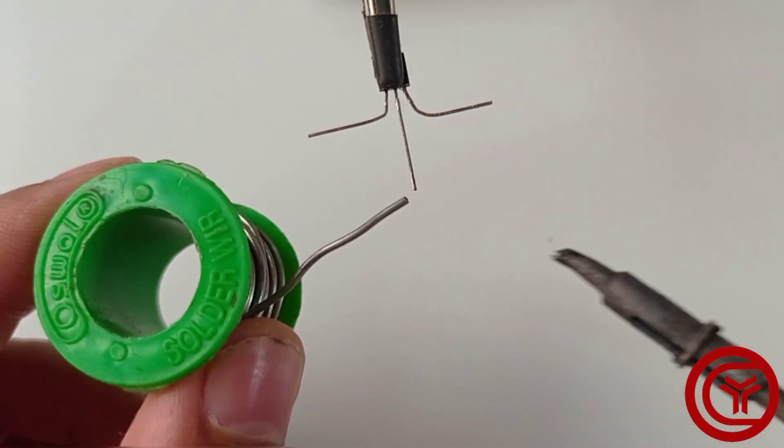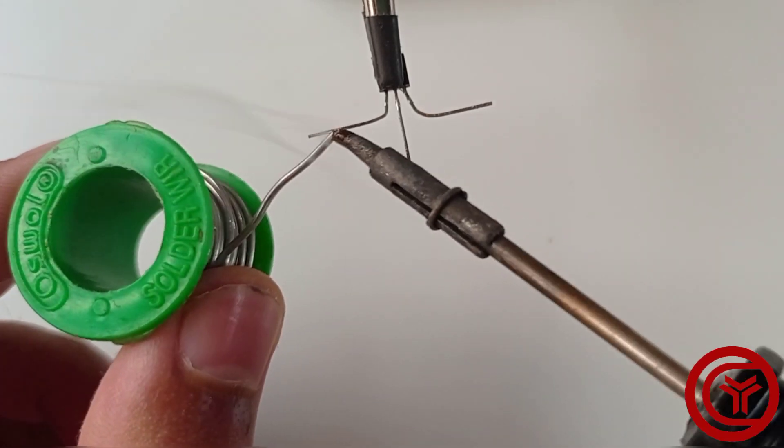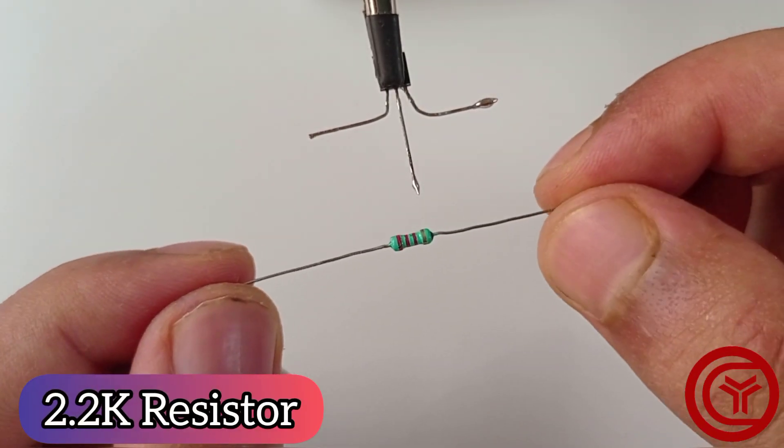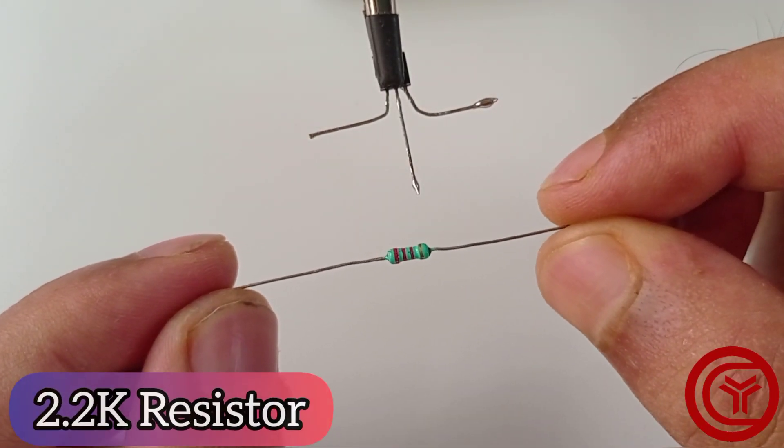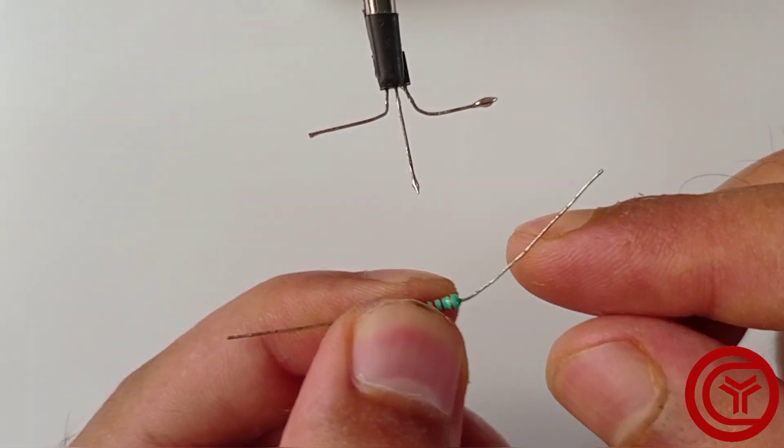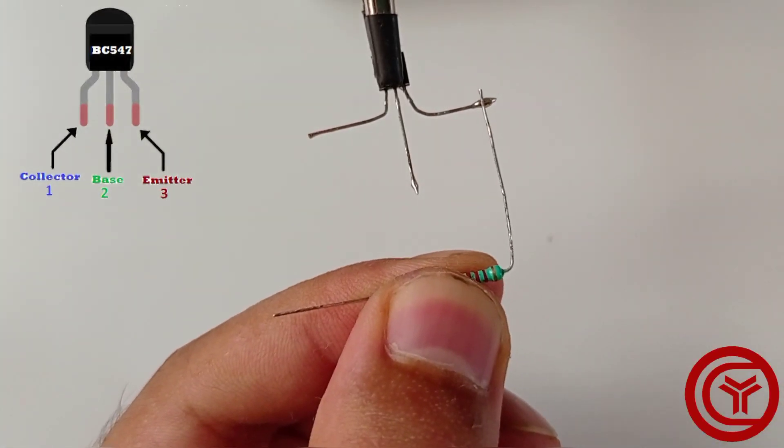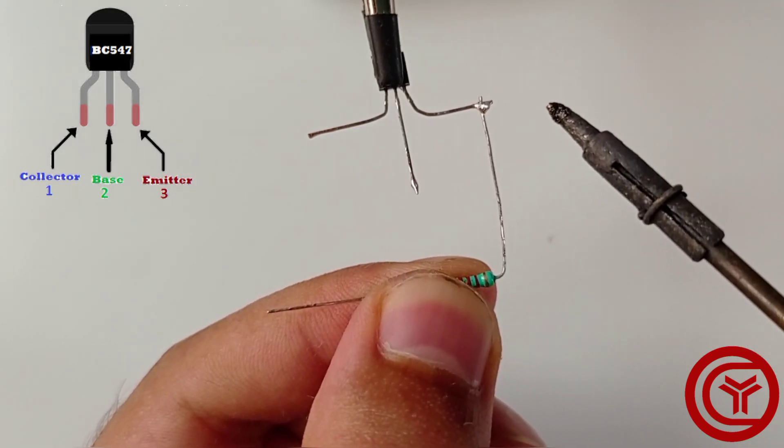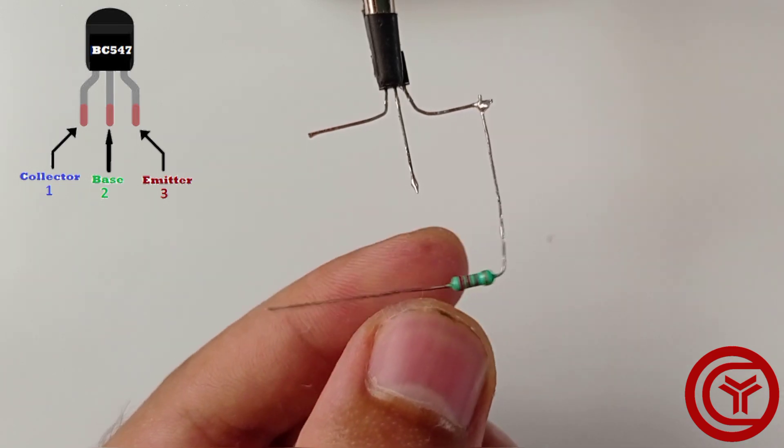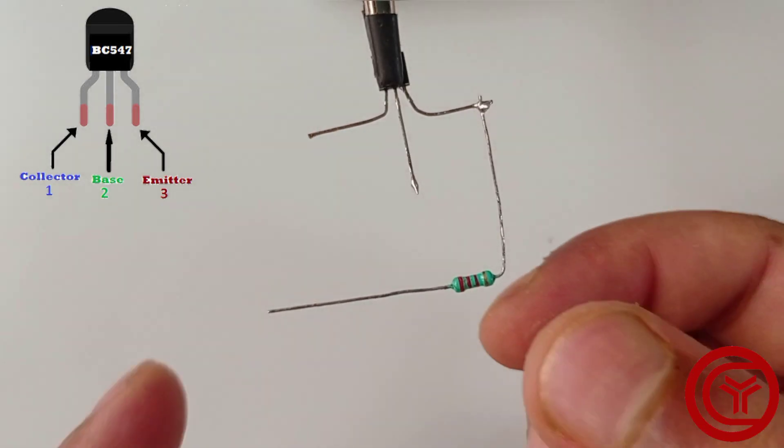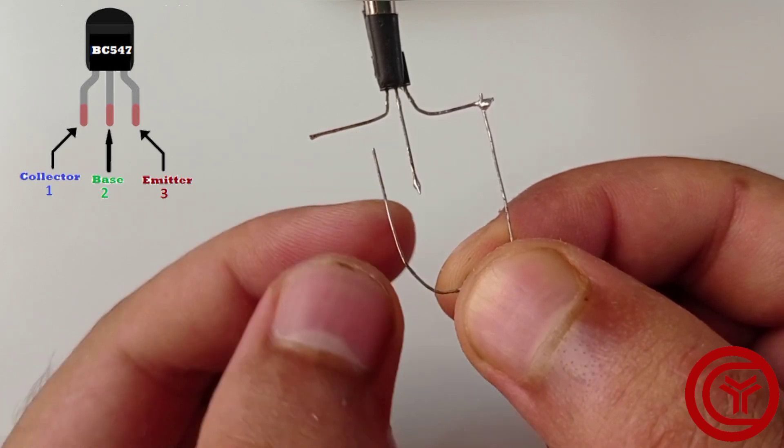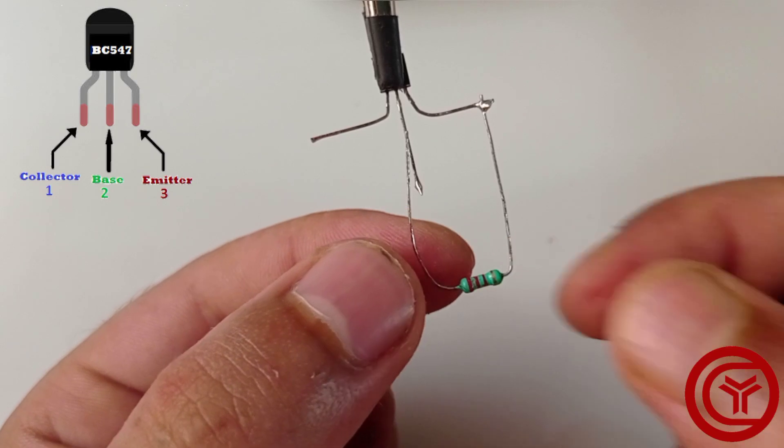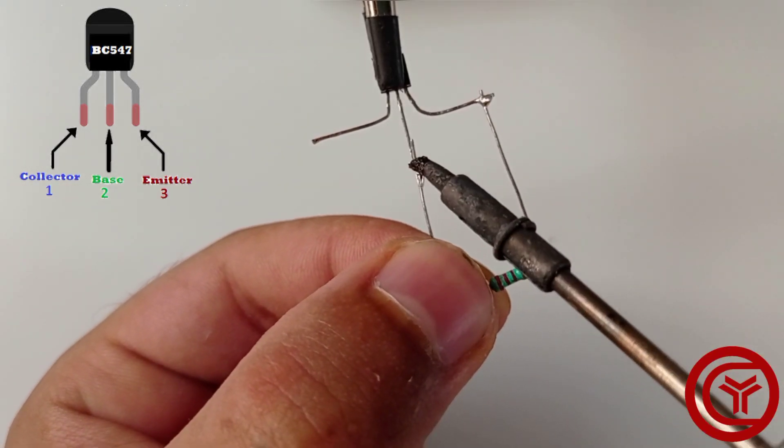First let's solder the pins of the transistor. We need a 2.2kΩ resistor. Solder resistor one end on emitter of transistor and solder other end on base of transistor.